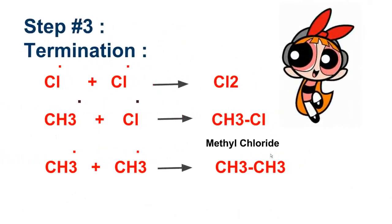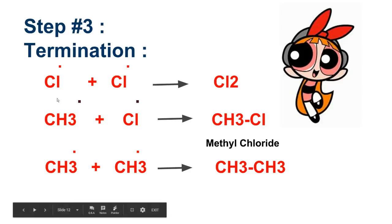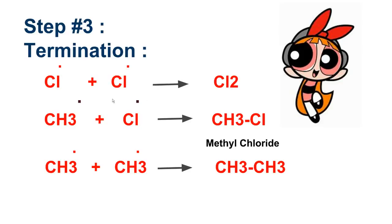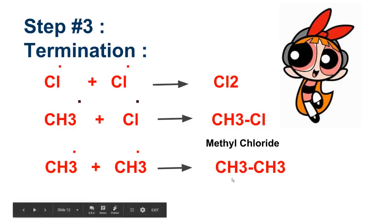Now students, the last step is termination, which is the end. In this step, all the free radicals join together with each other and form non-radical forms. Chlorine radicals combine to form a chlorine molecule; a methyl free radical combines with a chlorine free radical to form methyl chloride; and a methyl free radical combines with another methyl free radical to form ethane. So these are the end products and this is the termination step.